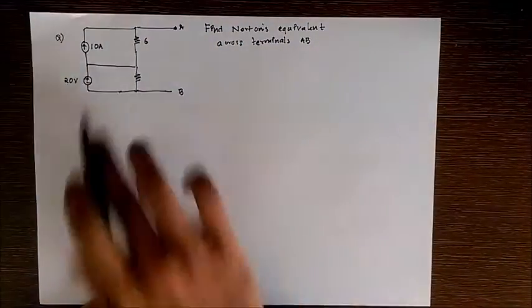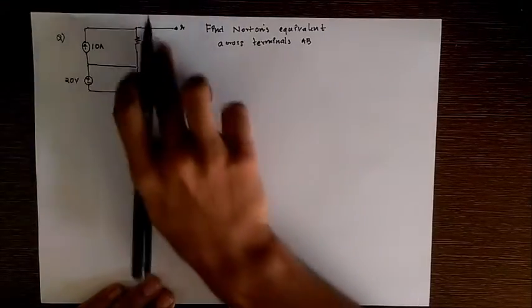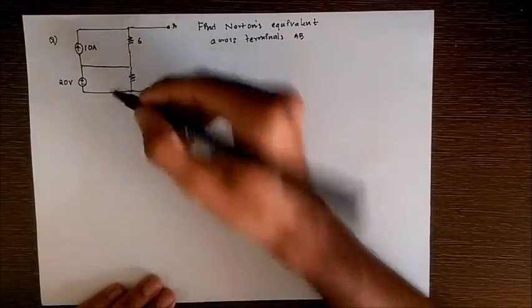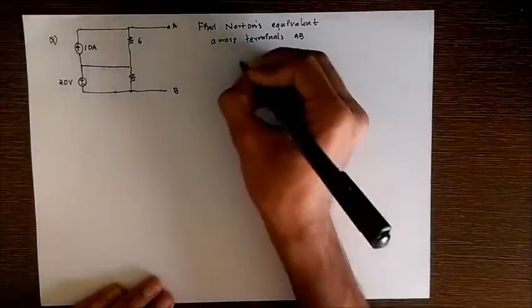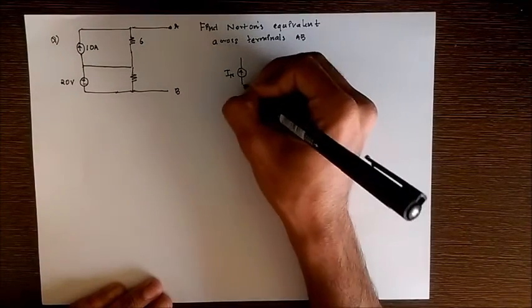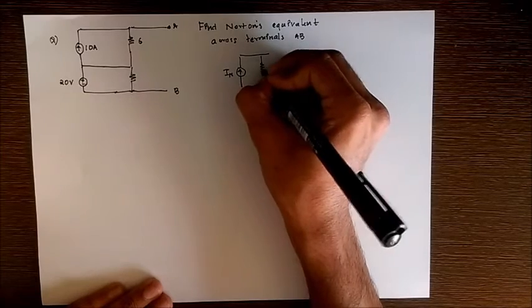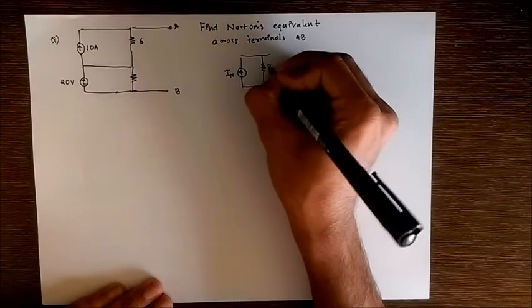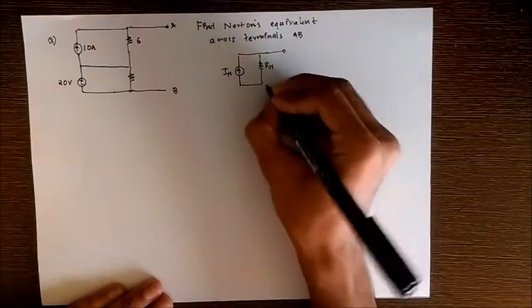Here we have to replace this whole system with a single current source having value In, which is Norton's current, in parallel with the resistance Rn or Norton resistance.